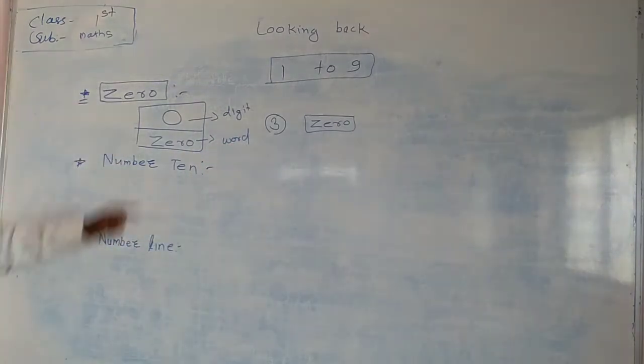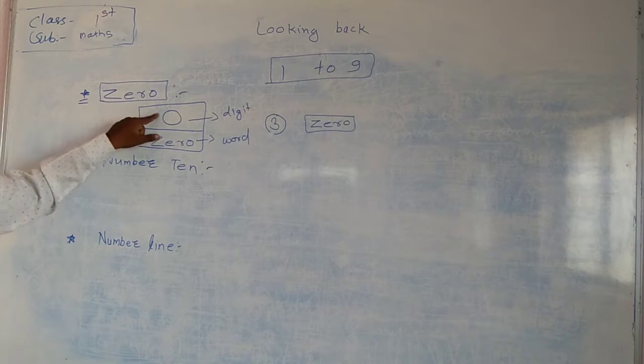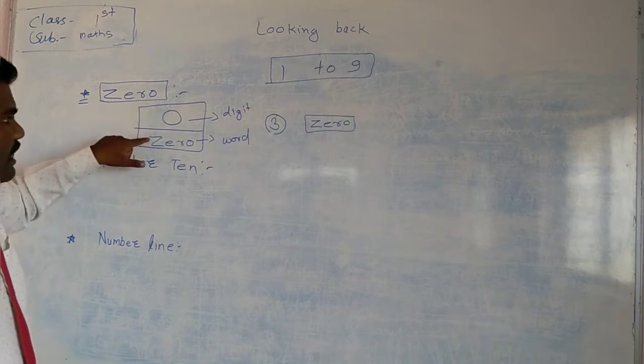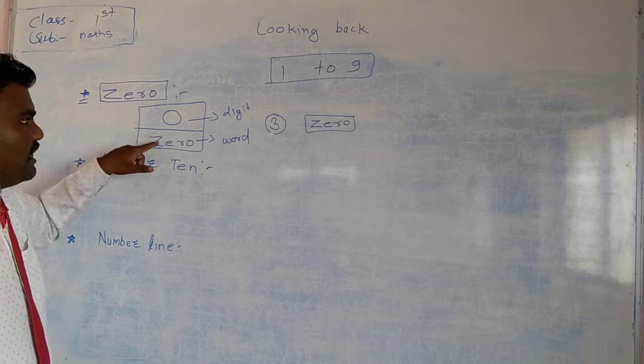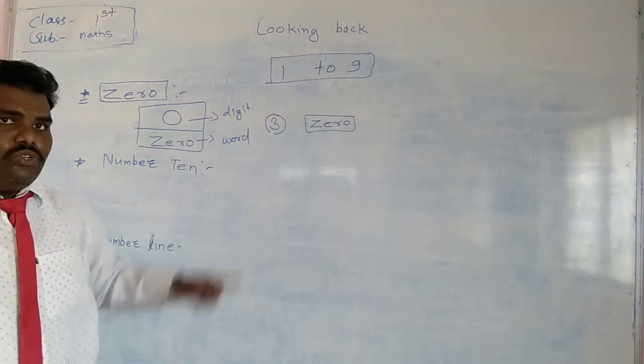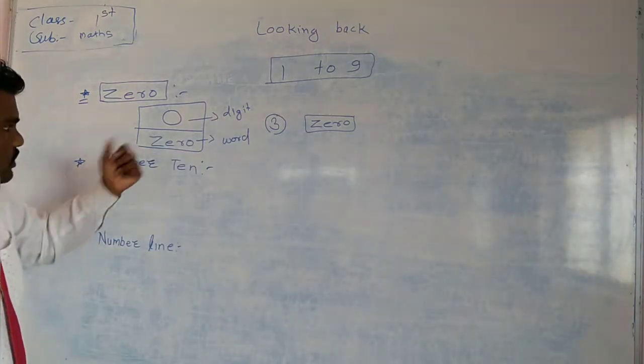How to write a 0 in digit? Like this. Like a circle. And how to write a 0 in word? Z, E, R, O. Zero.